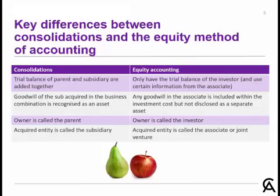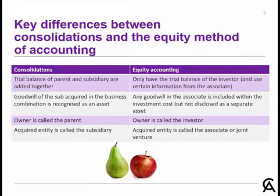Under consolidations, the goodwill of the subsidiary acquired in the business combination is recognised separately in the consolidated financial statements as an asset. In the equity method, any goodwill in the associate or joint venture is included within the investment costs that we've paid, but we don't disclose it separately as an asset. The owner in consolidations is called a parent; in equity accounting, it's called the investor. The acquired entity is called a subsidiary when consolidating, and when doing equity accounting it's called an associate or a joint venture.